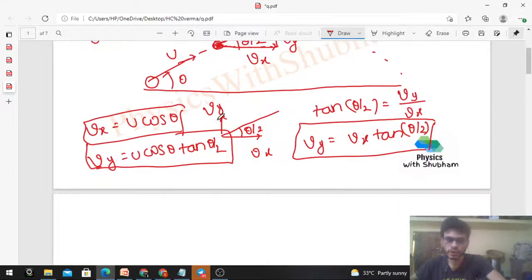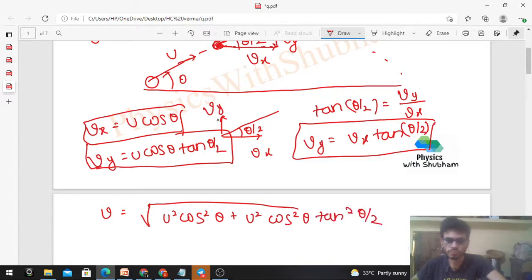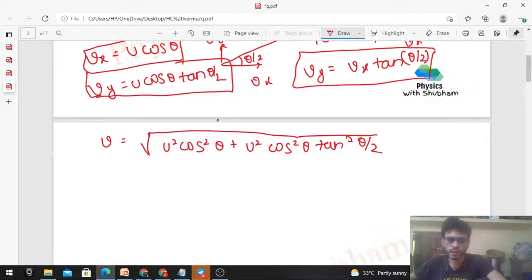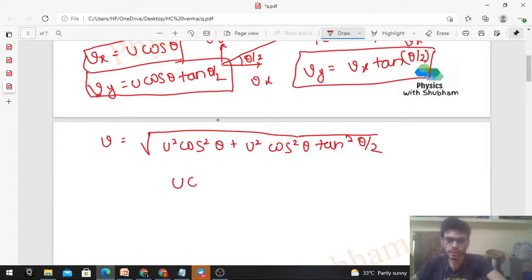We'll calculate V, the speed at point A. Speed will be √(vx² + vy²), so u² cos² θ + u² cos² θ × tan²(θ/2). Check what this gives: u cos θ comes out, and 1 + tan²(θ/2) = sec²(θ/2), so we get u cos θ × sec(θ/2).